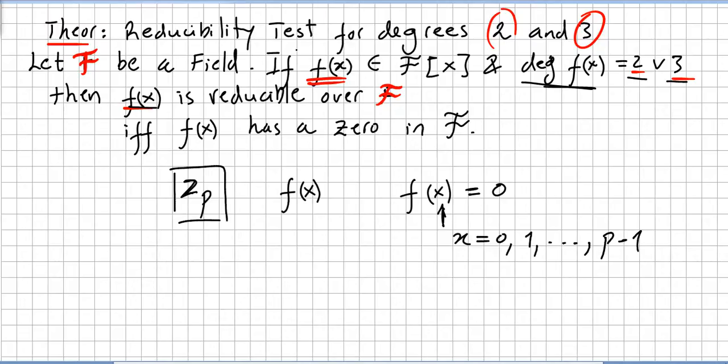Another fact is this is a reducibility test for degrees 2 and 3, so polynomials of a larger degree may be reducible over a field even though they do not have zeros in the field. Take, for instance, polynomials over the rational numbers.